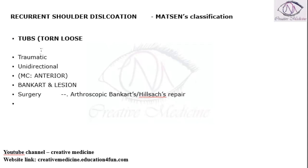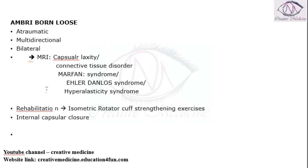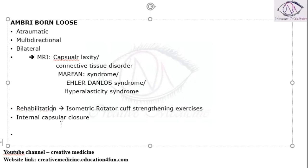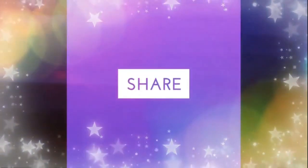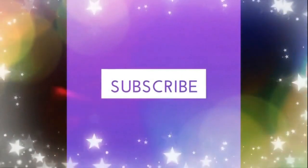All dislocations can be classified into two types: first, traumatic unidirectional with Bankart lesion treated by surgery; and second, atraumatic multidirectional bilateral lesions treated by rehabilitation with isometric rotator cuff strengthening exercises. This is the MASTENS classification for recurrent shoulder dislocation. Thank you for watching.